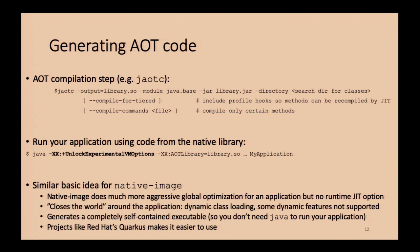Once you generate the library.so, to run your Java application with it you unlock experimental VM options, then use the flag dash-XX:AOTLibrary pointing to the library name. That tells the JVM to load this code and bind it so that when methods in it are called, they go to the AOT code instead of being interpreted or JIT-compiled. The basic idea is similar for native image — the Substrate VM approach — though I won't go into detail as there are many other talks covering it.